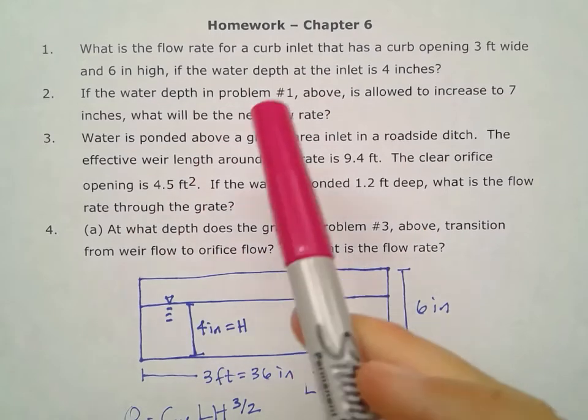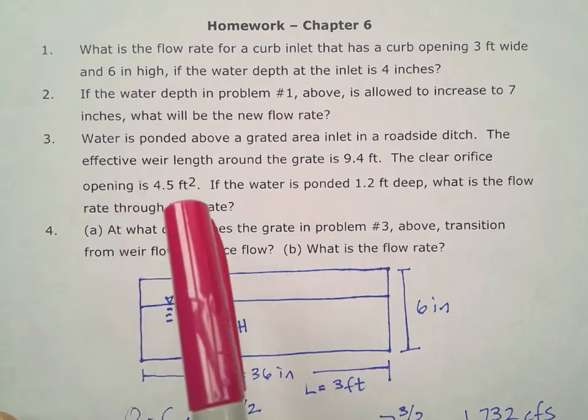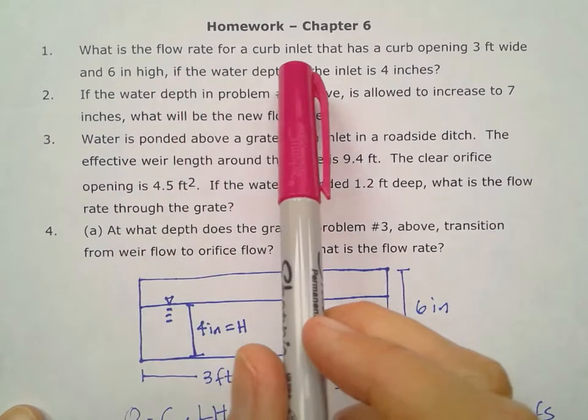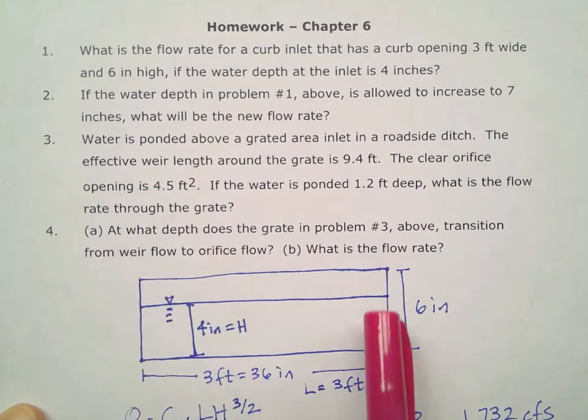For the second problem for homework six, chapter six hydraulics homework, it's very similar to the first where we have a curb inlet that's got this opening three feet wide and six inches high that I drew here.